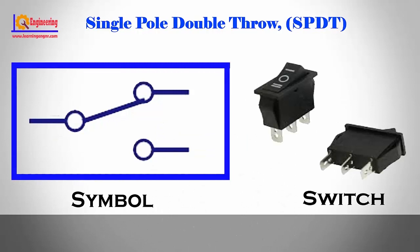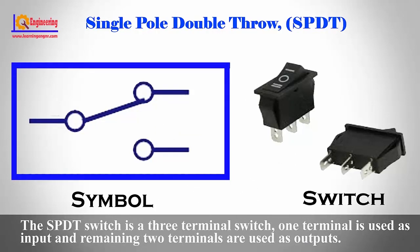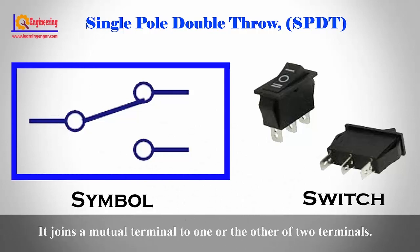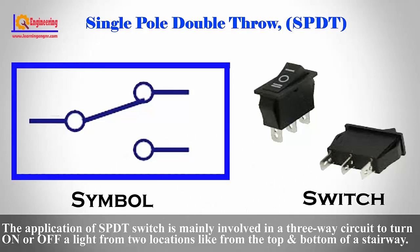SPDT — Single pole double throw. The SPDT switch is a three terminal switch. One terminal is used as input and the remaining two terminals are used as outputs. It joins a common terminal to one or the other of the two terminals. The application of the SPDT switch is mainly in a three-way circuit to turn on or off a light from two locations, like from the top and bottom for a stairway.